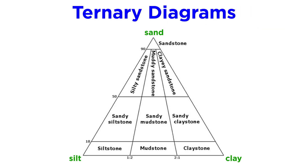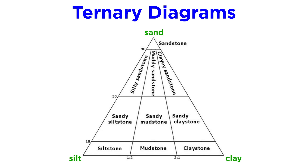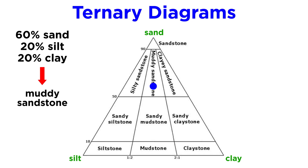Geologists often use ternary diagrams to systematically classify rocks. Ternary diagrams represent the relative proportions of three components — in this case different grain sizes — with each corner of the triangle representing 100% of one component. For example, if you were to determine that a sedimentary rock contains 60% sand, 20% silt, and 20% clay, it would be classified as a muddy sandstone.